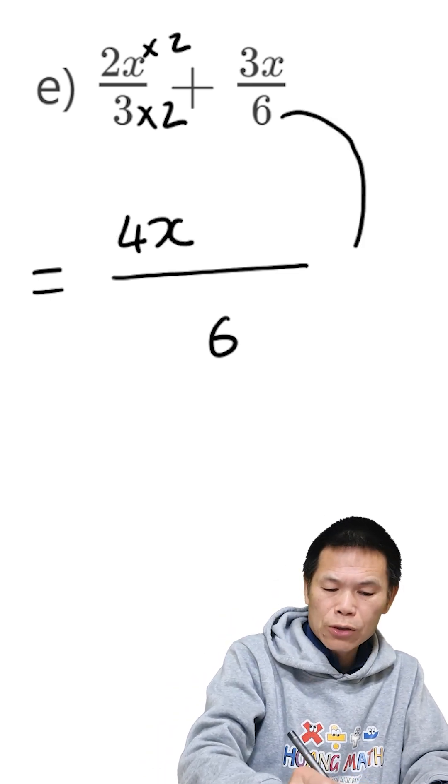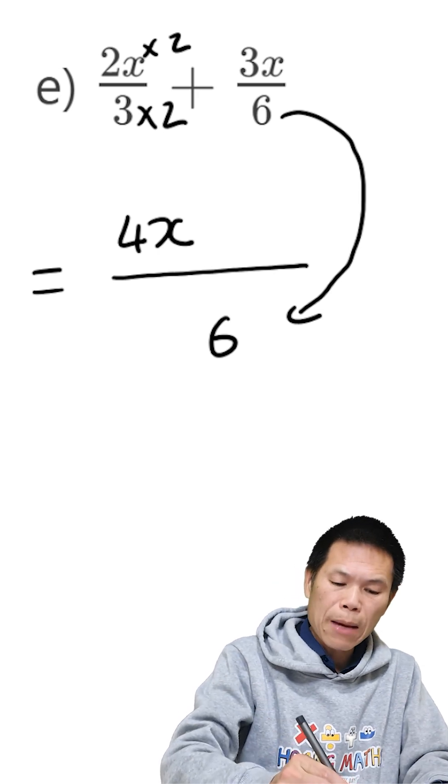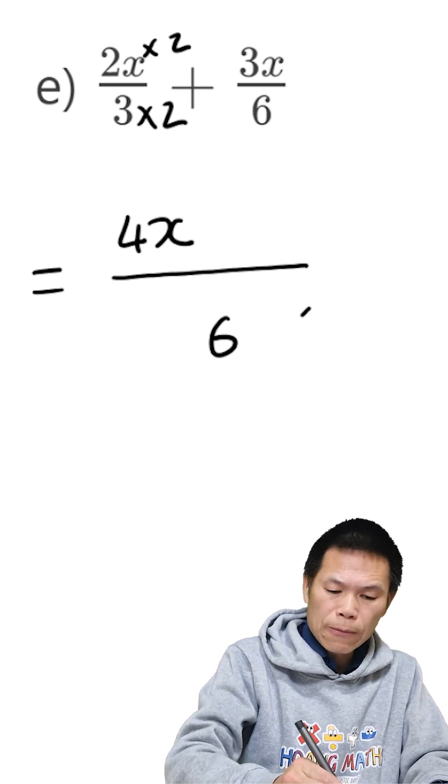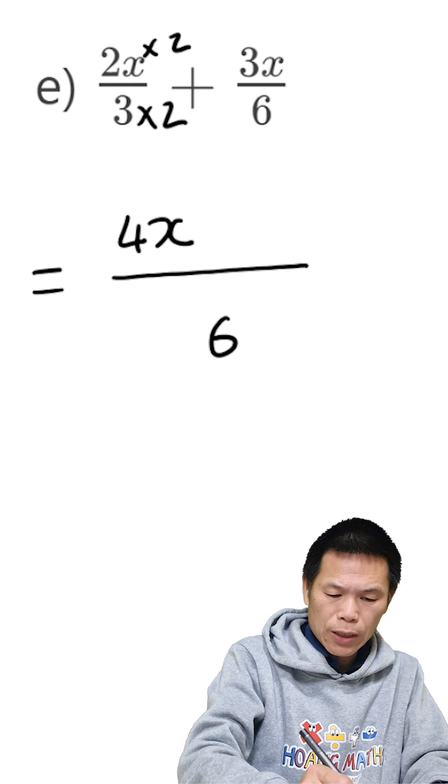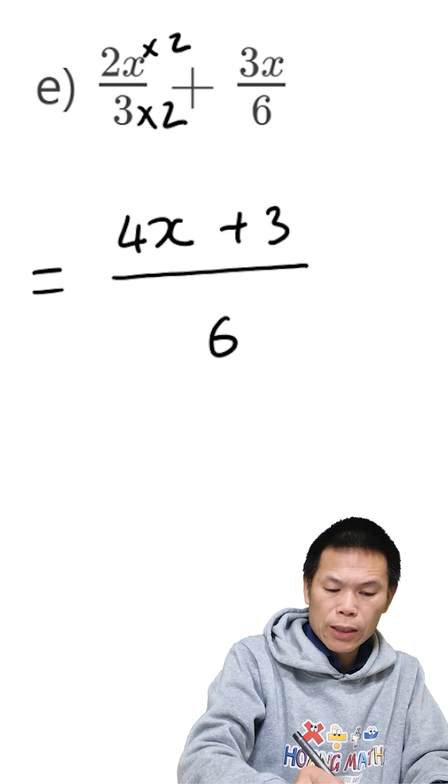And from 6 to 6, I times by 1. So the top times by 1 as well. So that is 3 times 1 is 3. So we add 3x.